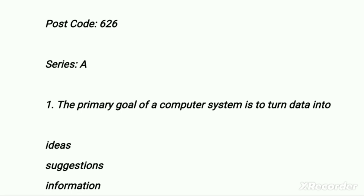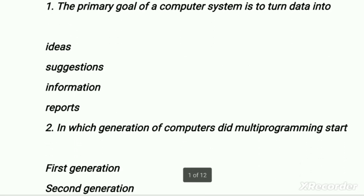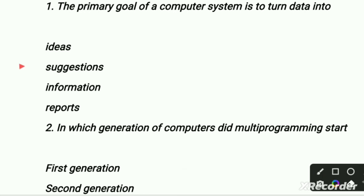Our first question is related to computer: the primary goal of a computer system is to turn data into — first option is idea, second is suggestions, third is information, fourth is reports. Idea, suggestion, and reports are not related to it. So the right option is the third option: information. The primary goal of a computer system is to turn data into information. Information means a set of data.